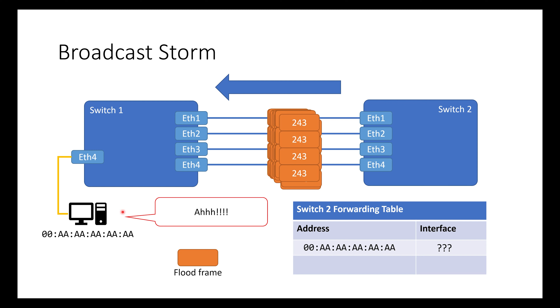That's what spanning tree was built to do — prevent these multiple paths from happening. Spanning tree would disable all the interfaces and then only allow one of them to forward. So we want to avoid MAC flapping and broadcast storms, but we still want the traffic to pass.